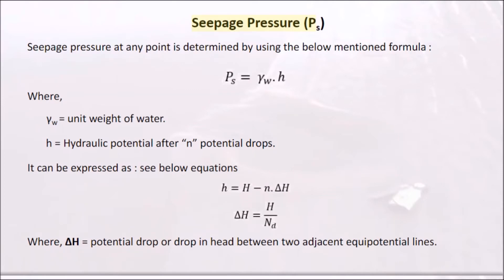Seepage pressure Ps at any point is determined using the formula Ps = γw × h, where γw is the unit weight of water and h is the hydraulic potential after n potential drops. The potential drop or drop in head between two adjacent equipotential lines can be expressed accordingly.